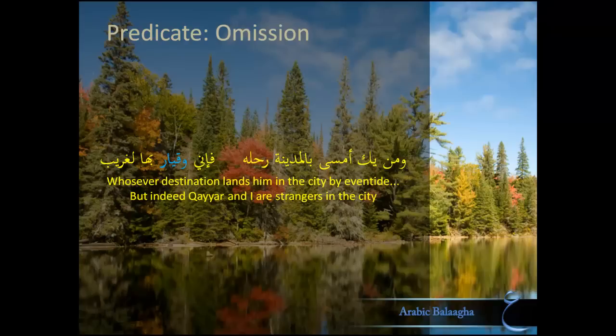Our first example is by a poet, Dabi ibn al-Harth, who says: وَمَنْ يَكُ أَمْسَى بِالْمَدِينَةِ رَحْلُهُ فَإِنِّي وَقَيَّارٌ بِهَا لَغَرِيبُ — Whosoever destination lands him in the city by eventide, but indeed Qayyar and I are strangers in the city.